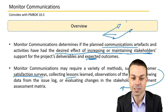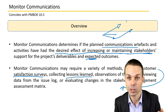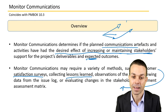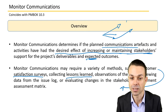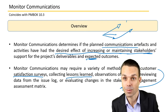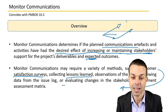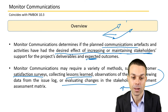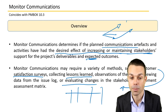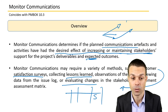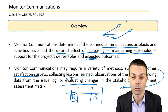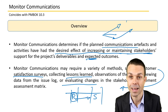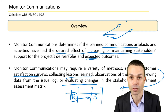Other methods include collecting lessons learned, maybe through a retrospective at the end of each sprint, observations of the team, reviewing data from the issues log, or evaluating changes in the stakeholder engagement assessment matrix. We need to monitor whether people are becoming more aware, becoming supportive, or actually becoming resistant to our project, and try to improve it where we can.